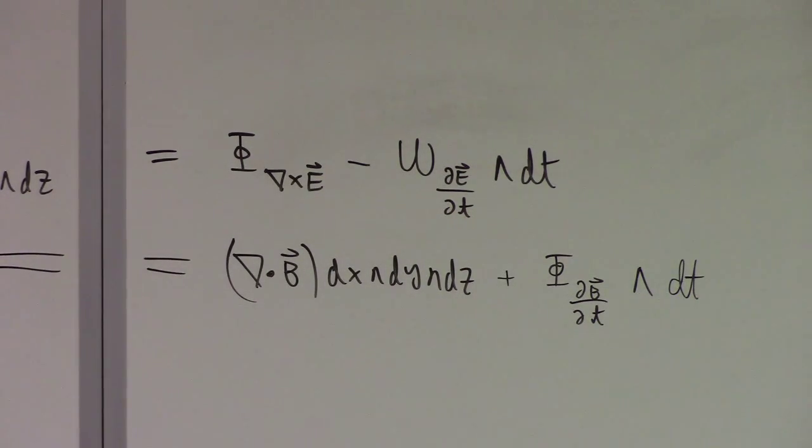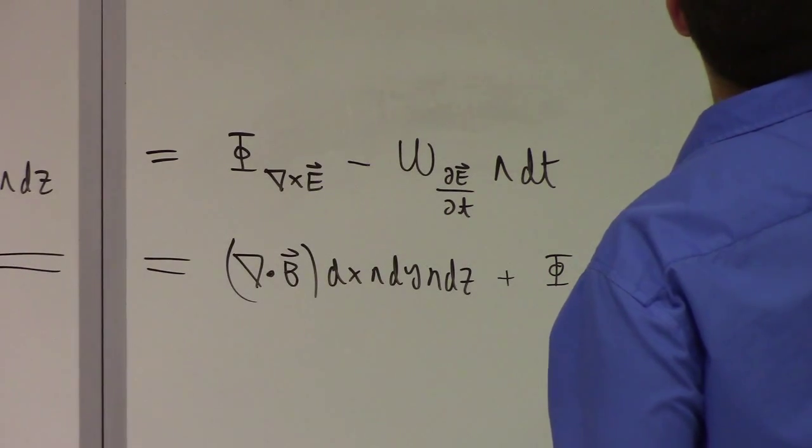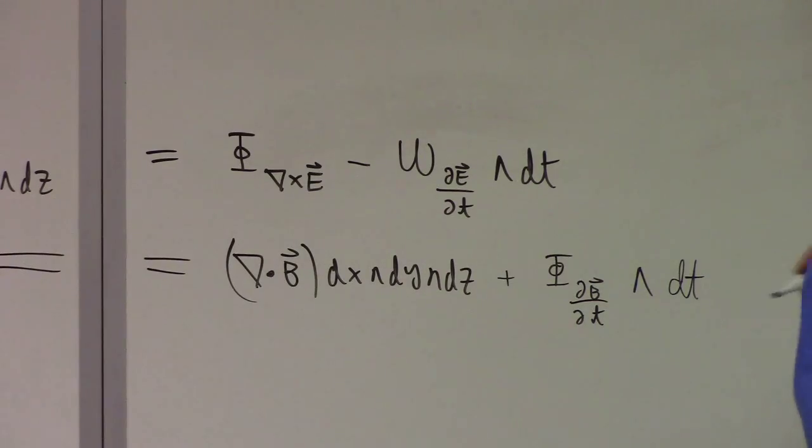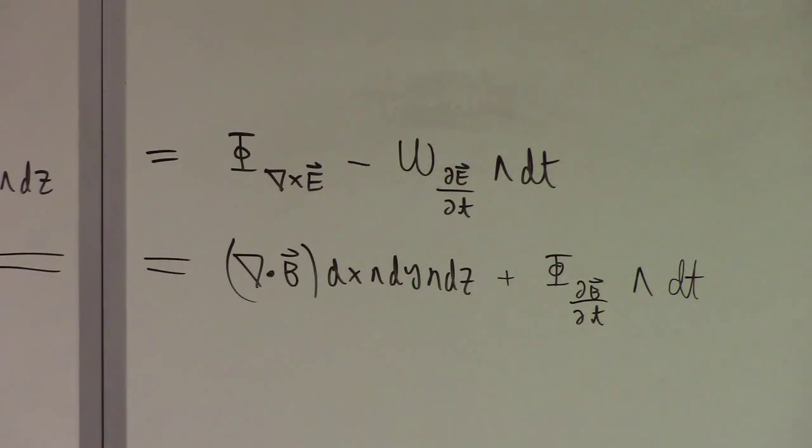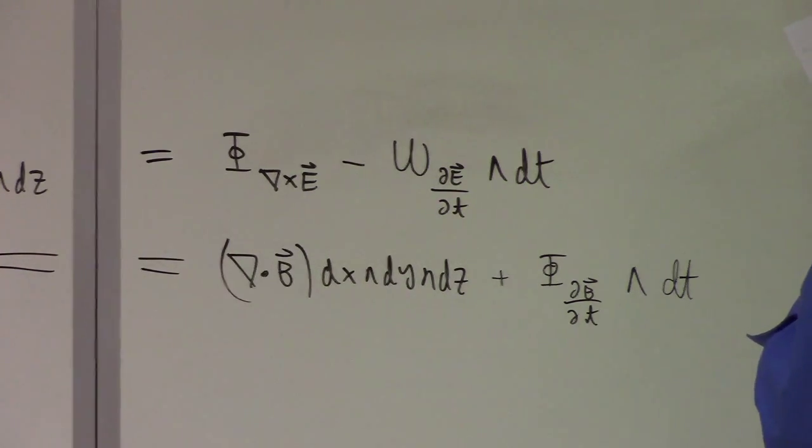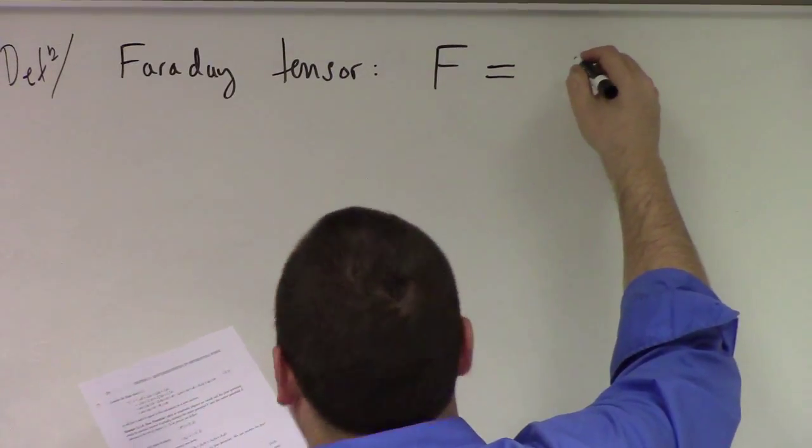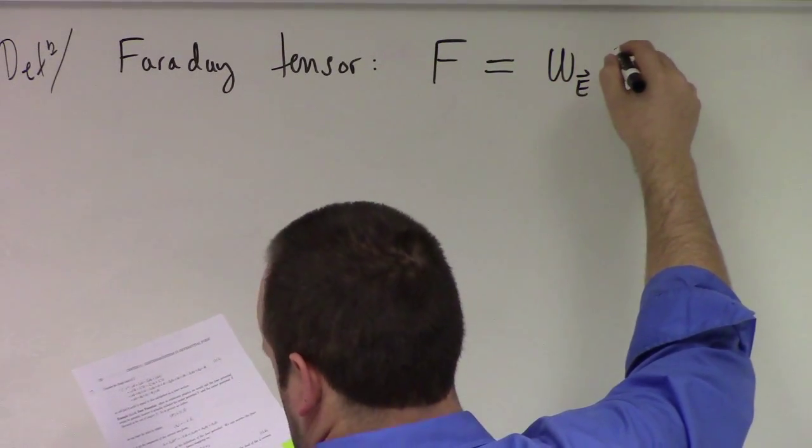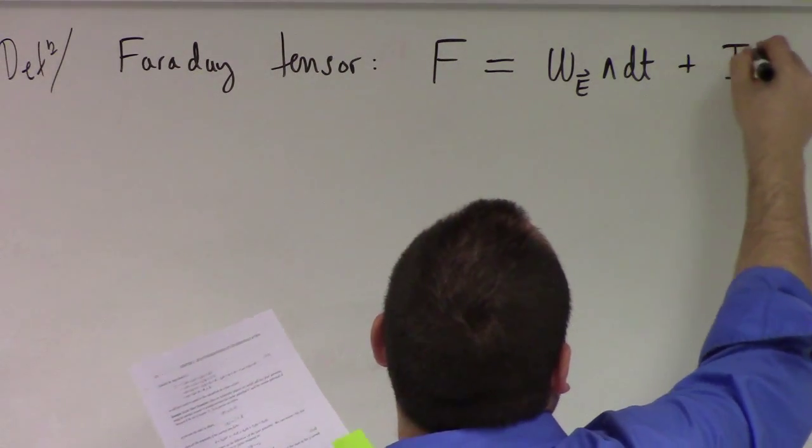So, definition: Faraday tensor, which is actually a two-form - the Faraday two-form more specifically in four dimensions. An antisymmetric object in four dimensions has how many independent components? How many independent components do the electric and magnetic fields have? Six. That's right. And there you have it. The Faraday tensor F is a way of writing the electric and magnetic fields as one composite object in the following way: it's the work form of the electric field wedge dt plus the flux form of the magnetic field.